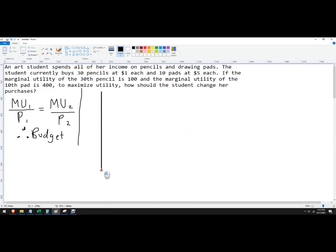So what the model is, is that a consumer can buy two products. In this particular problem, it's pencils or pads.